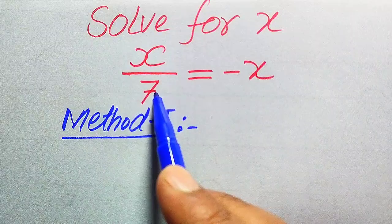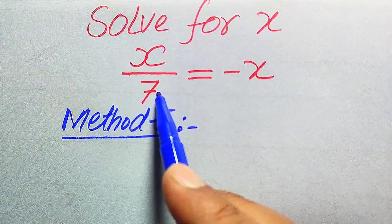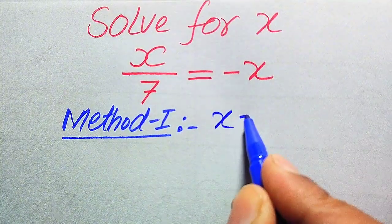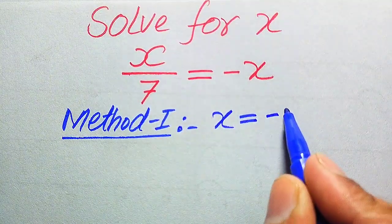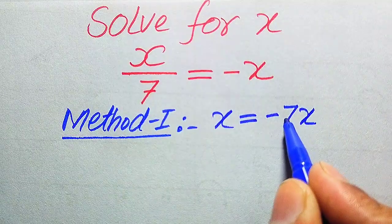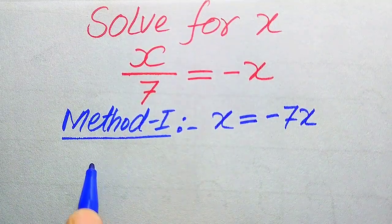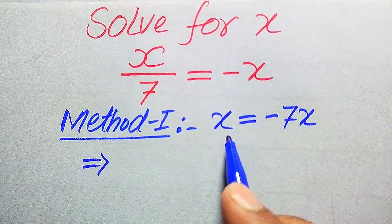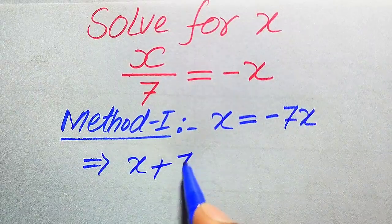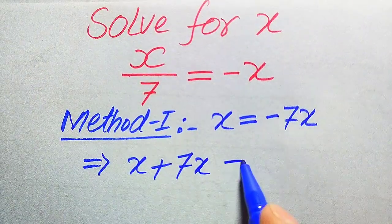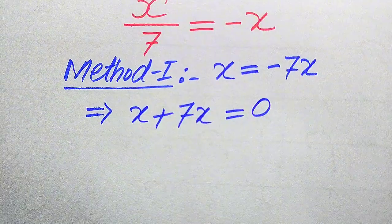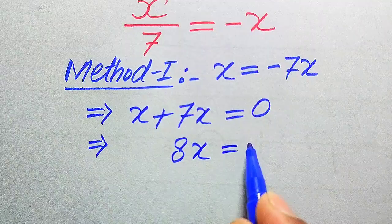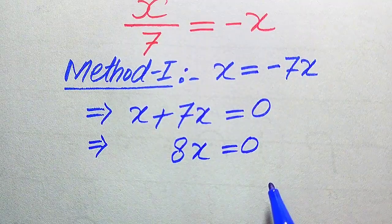In the first method, this 7 is dividing the left hand side, and when we move it to the right hand side it is multiplied by x, giving x equals 7 times of minus x, which equals minus 7x. This negative term on the right hand side moves to the left hand side as positive, becoming x plus 7x equals 0, and x plus 7x becomes 8x equals 0.